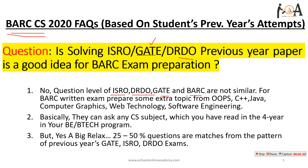Specific to the BARC CS 2020 exam, some additional topics and subjects are covered, such as object-oriented concepts, OOPs — like polymorphism and abstraction — C++ concepts, Java's important input/output questions, computer graphics, web technology, and software engineering. They can even ask from engineering mathematics topics. So this is a somewhat different exam compared to GATE, ISRO, or DRDO.